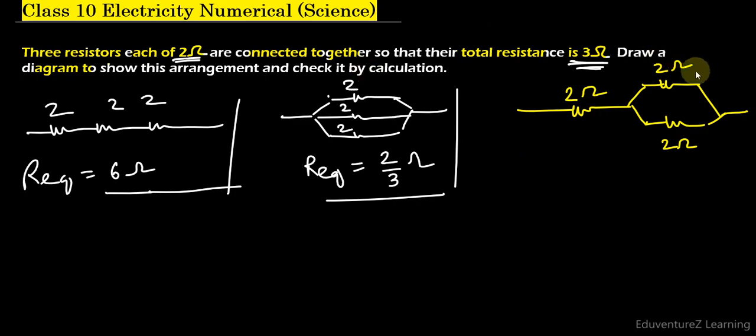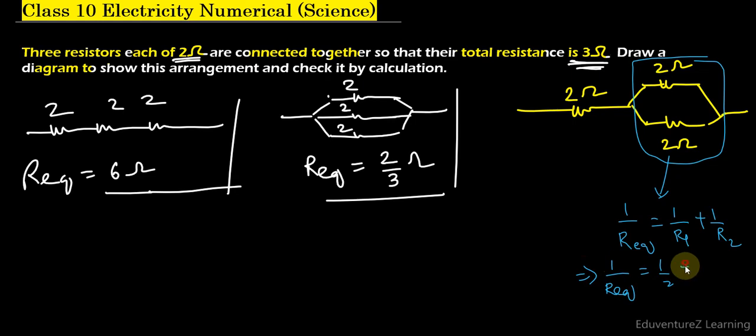As we can see, these are in parallel, so their equivalent resistance will be 1 upon R1 plus 1 upon R2. So 1 upon R equivalent equals 1 by 2 plus 1 by 2, which is equal to 1. So R equivalent is also equal to 1 ohm.